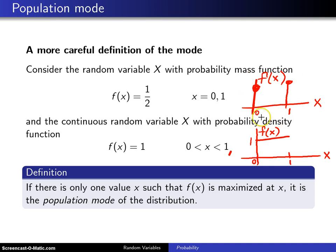This example right here has two values, but not a single value where f of x is maximized. So in this case, there is no population mode.